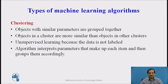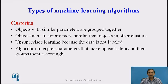The second type is clustering algorithms, which are also called unsupervised learning algorithms, where objects with similar parameters are grouped together to form a cluster. Objects in a cluster are more similar to each other than to objects in other clusters. Because the data is not labeled and may be of very large volume, we first cluster it and then may apply a supervised algorithm to classify the clusters. The algorithm interprets parameters that make up each item, groups them accordingly, simplifying the process before classification.